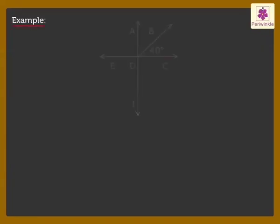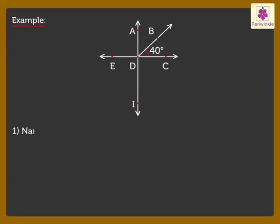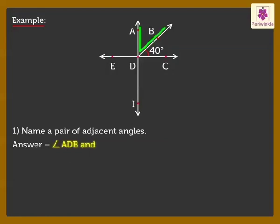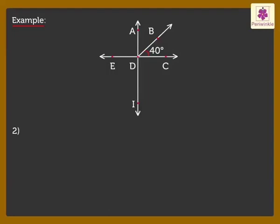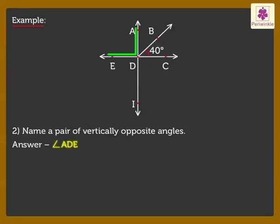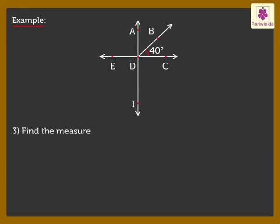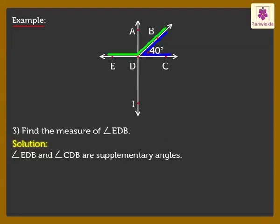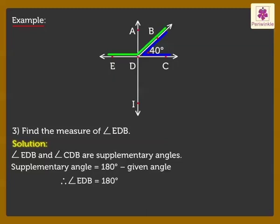Now, let's study the figure to answer a few questions. Question 1: Name a pair of adjacent angles. Question 2: Name a pair of vertically opposite angles. Question 3: Find the measure of Angle EDB. From the figure, Angle EDB and Angle CDB form a pair of supplementary angles. Therefore, Angle EDB is equal to 180 degrees minus 40 degrees, which is equal to 140 degrees.